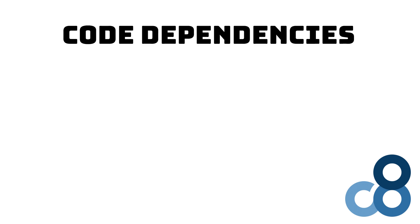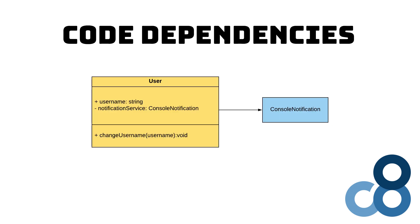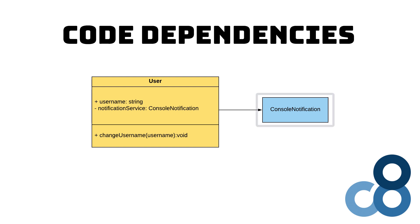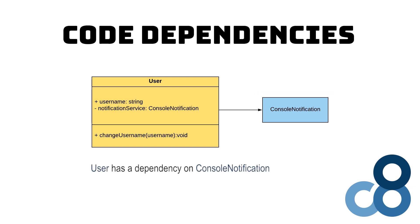Let's take a look at the following example to make sure we understand what a code dependency is. In this case, we have a User class with a Username property and a ChangeUsername method. We also have a notification service property, which holds a reference to an instance of the ConsoleNotification class. The ConsoleNotification class is responsible for writing a changed username to the console. In other words, we say the User class has a dependency on the ConsoleNotification class.